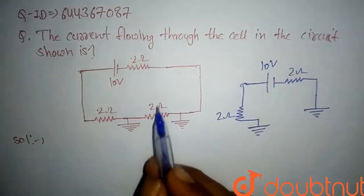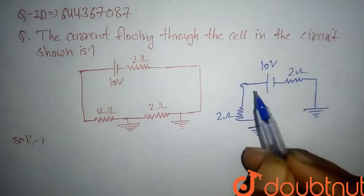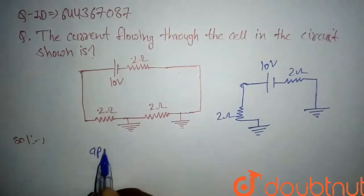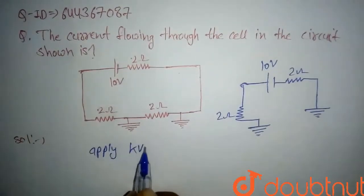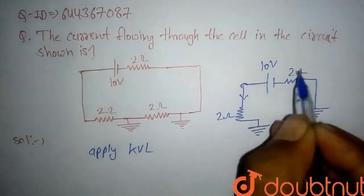So we will apply KVL. Just we will apply KVL. After applying KVL, we see that, assume the current flowing through the circuit is I. Current flowing through the circuit is I.